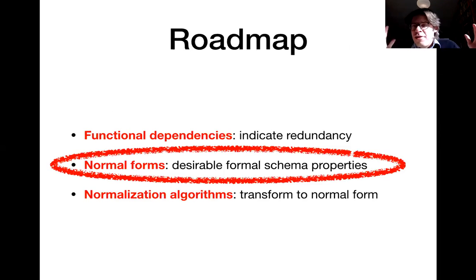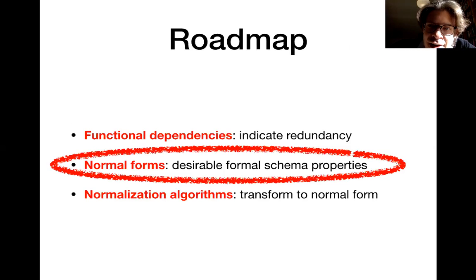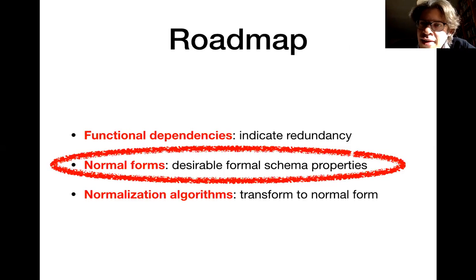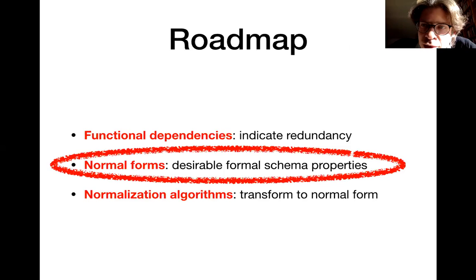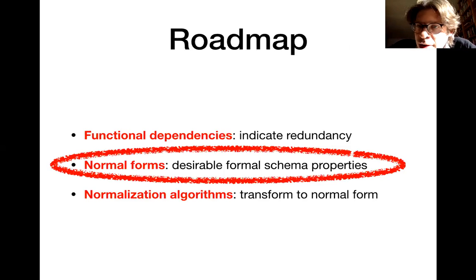Now we have discussed functional dependencies and a couple of corresponding algorithms that allow you to infer functional dependencies. Next up is our discussion of normal forms. We say that a schema is in a normal form if it has certain desirable properties with regards to redundancy. We will see some of the most common normal forms, though there are more normal forms also used in practice.